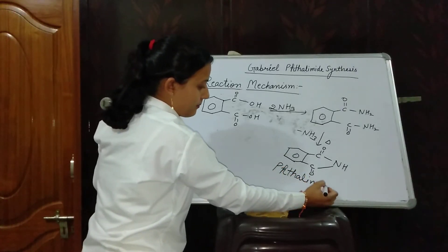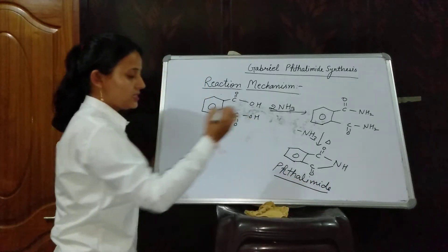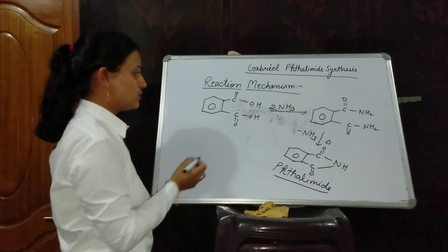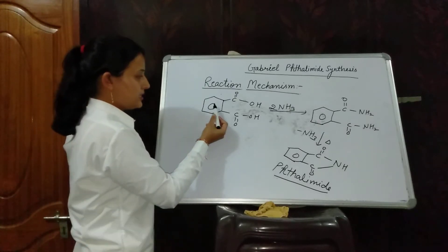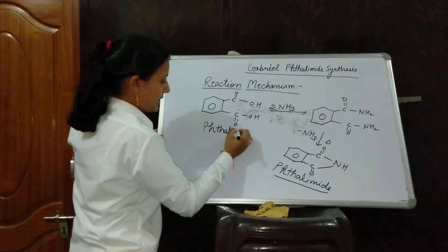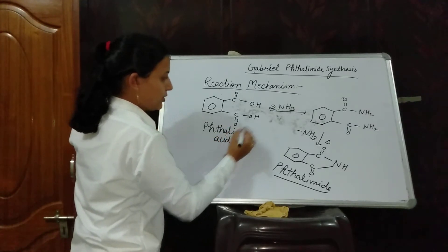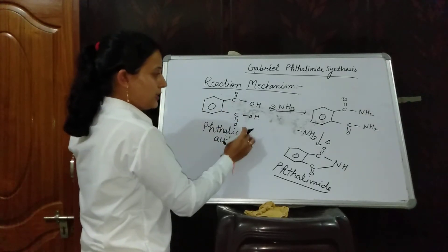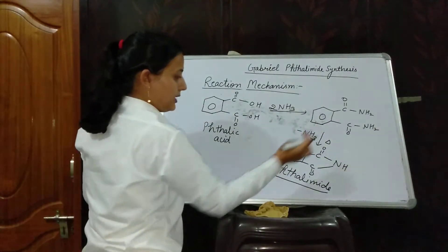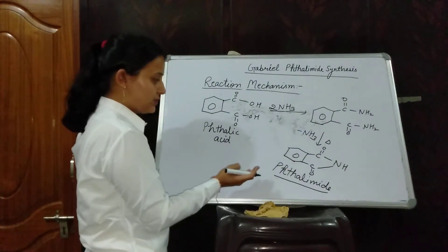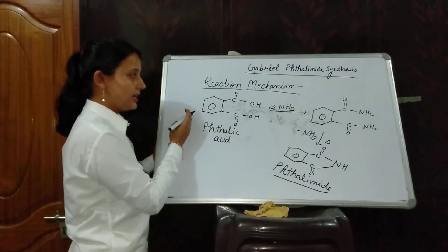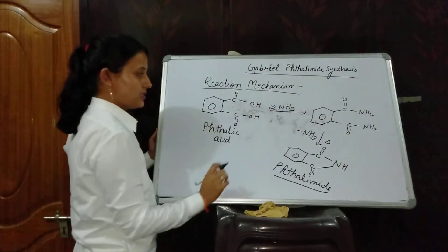This is our reactant molecule — phthalimide. Let me revise: this is phthalic acid. When ammonia is passed through phthalic acid, there is formation of an addition product, and when this product is heated, phthalimide is formed. This phthalimide will be used as the starting material in Gabriel Phthalimide synthesis.